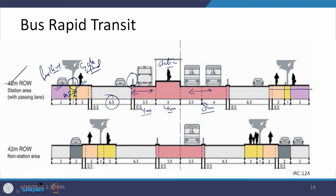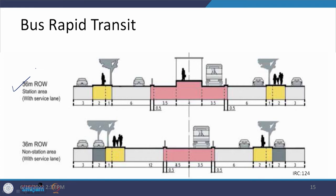At a non-station area for 42-meter ROW, the station width is removed leaving only 8 meters for the BRT lanes; the rest remains the same. For a 36-meter ROW, only 1 lane is provided on either side of the station, taking 4 meters, with corresponding reductions elsewhere. The same conditions apply — one for station area and another for non-station area.